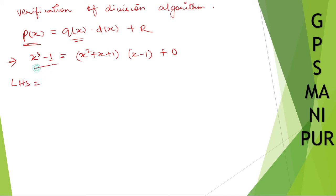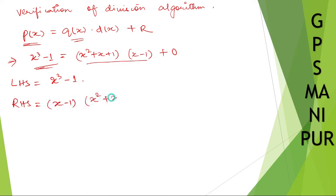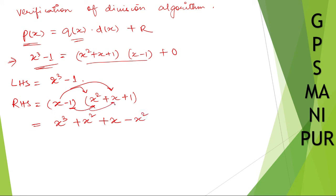Left hand side is equal to x cube minus 1. Right hand side is equal to x minus 1 into x square plus x plus 1. Taking x and multiplying first: x into x square is x cube, x into x is plus x square, x into 1 is plus x. Then minus 1 into x square is minus x square, minus 1 into x is minus x, and minus 1 into 1 is minus 1. Now plus x square and minus x square cancel, plus x and minus x cancel. What is left is x cube minus 1, which is equal to the left hand side. Hence verified.